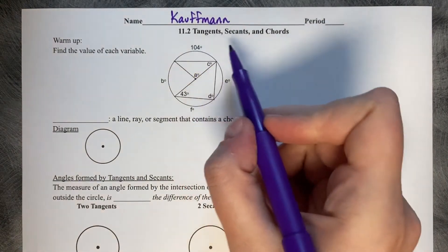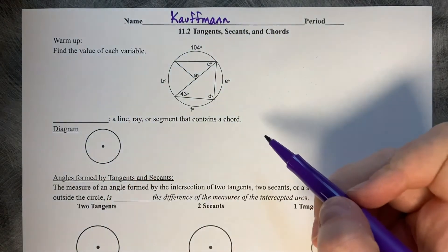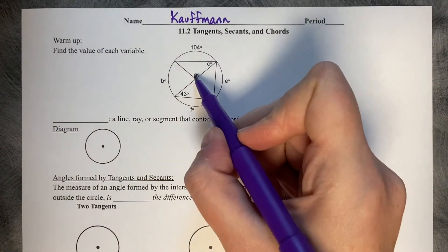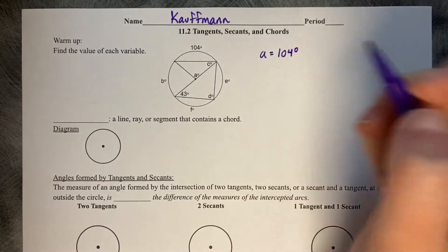11.2 tangents, secants, and chords. Find the value of each variable. Let's start with A. A is a central angle, so A is also equal to 104 degrees.